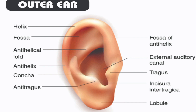Eardrum, or tympanic membrane, is a thin membrane that separates the outer ear from the middle ear. When sound waves reach the eardrum, it vibrates and sends the vibrations to the middle ear. The main function of the outer ear is to collect sound waves and direct them towards the middle ear, where they will be amplified and transmitted to the inner ear for processing. The pinna helps to localize sound, while the ear canal and eardrum work together to protect the ear and transmit sound.